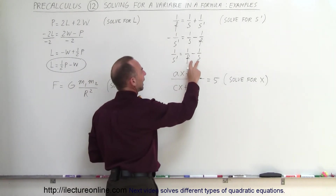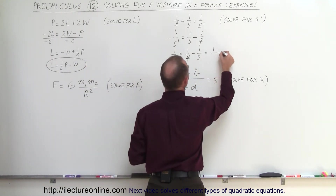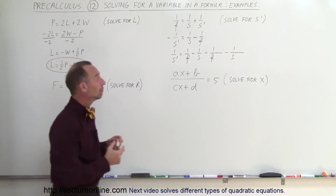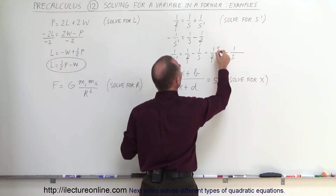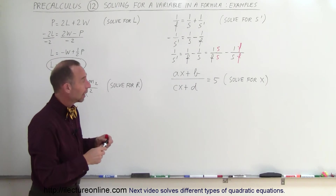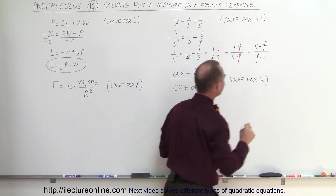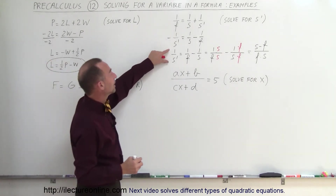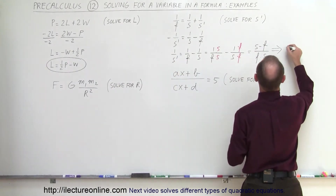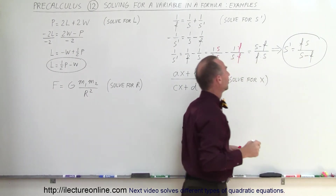Now I want to add these fractions together. Since the denominators are different, I need a common denominator — the product of the two. I multiply the top and bottom of 1/F by S, and multiply the top and bottom of 1/S by F, so both denominators become F times S. This gives me S minus F over F times S. The last step is to take the inverse of both sides: S prime equals F times S divided by S minus F, and that's the result.